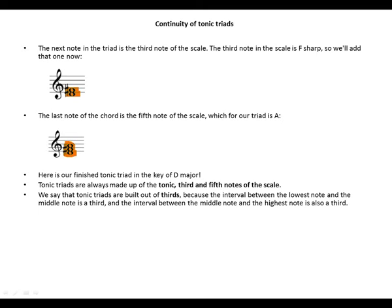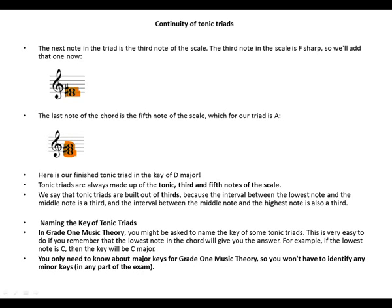Naming the key of tonic triads. In Grade One music theory, you might be asked to name the key of some tonic triads. This is very easy to do if you remember that the lowest note in the chord will give you the answer. For example, if the lowest note is C, then the key will be C major.